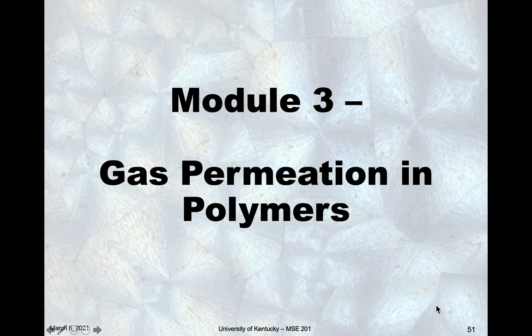Up to this point, when we talked about non-steady-state diffusion, we were dealing a lot with solid diffusion — interstitial or substitutional atoms diffusing into a solid material, for example carbon in iron. However, there's a slight variation when we think about polymers, in that a lot of the applications are for gas diffusion. So in this module, we're going to talk about gas diffusing in polymers, and for that we term that permeation — gas permeation in polymers.